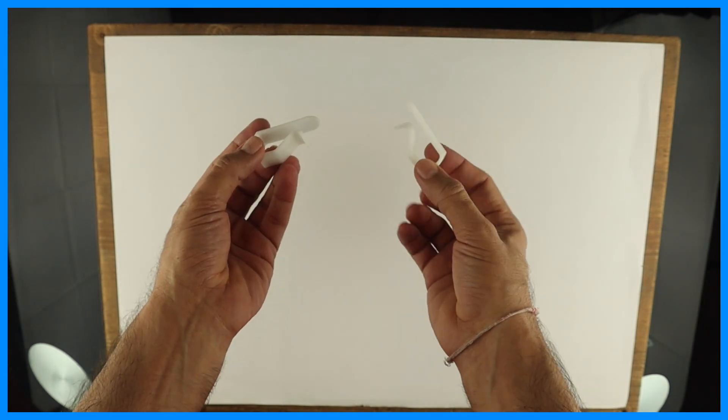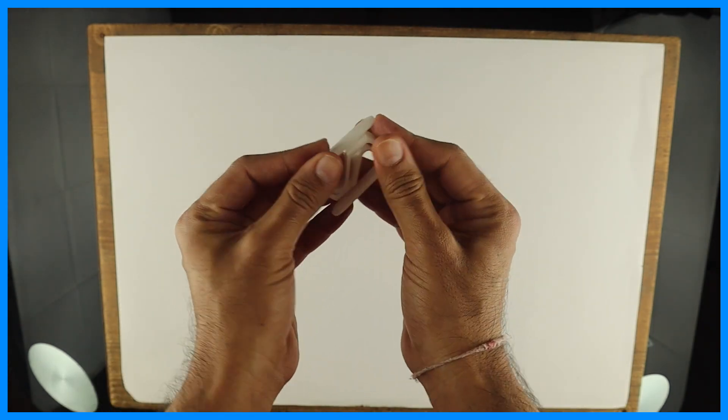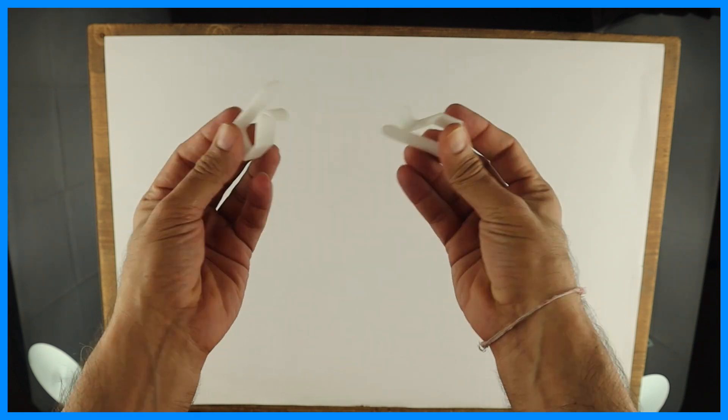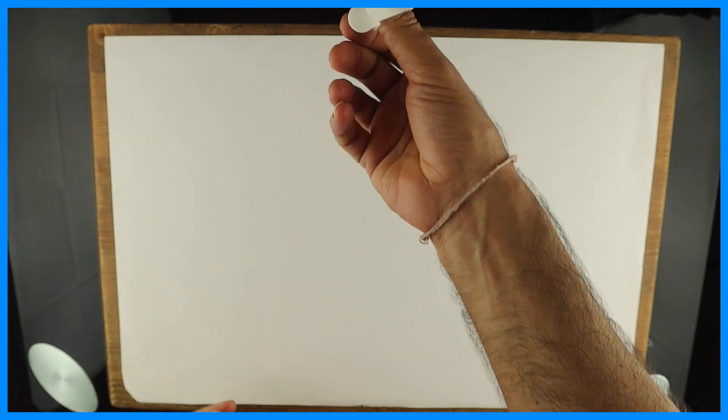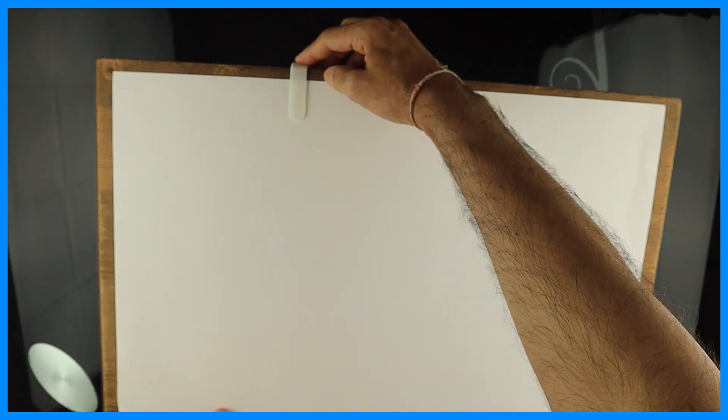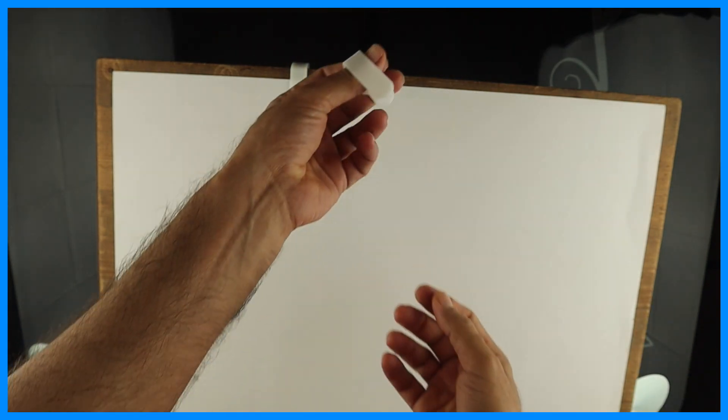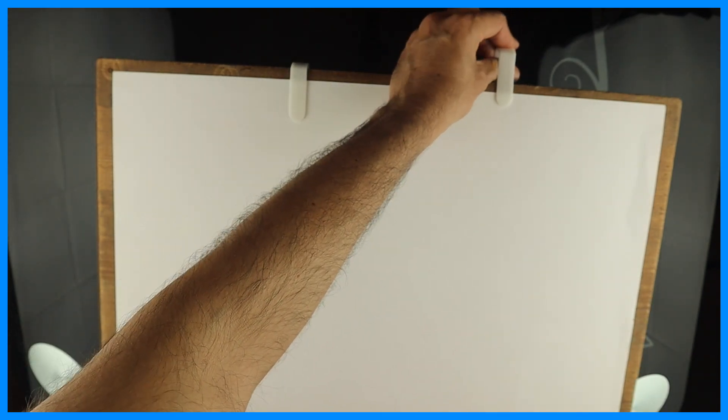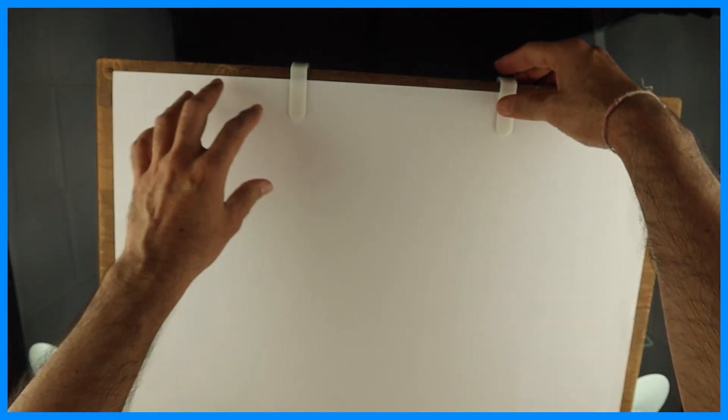After that we require board clips. See, we can fix it like this. It is available in plastic as well as in metal. This is how we use it. See, we put a thumb, and this is how it will go.